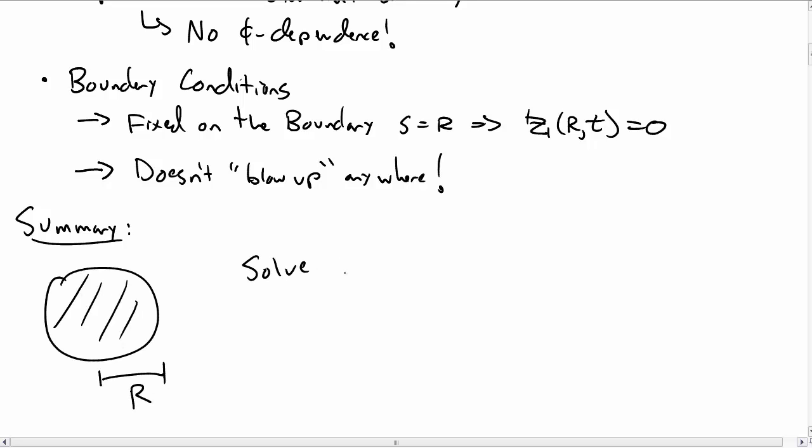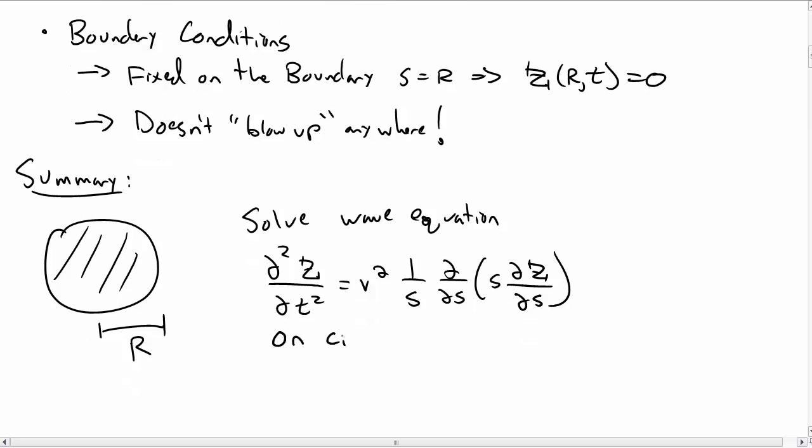Let's summarize how far we've come. The problem we're interested in is we want to solve the wave equation on a circular domain, from a circular membrane. When we get rid of phi dependence, we have the second derivative with respect to time equal to the derivative with respect to s, namely the Laplacian with respect to s.